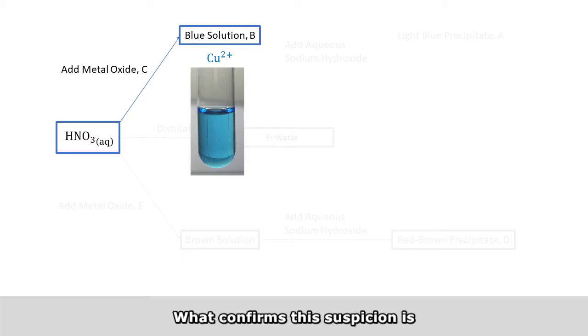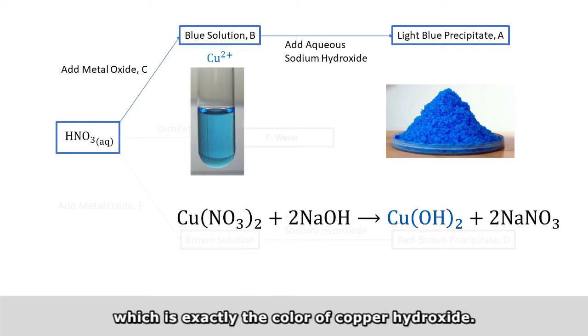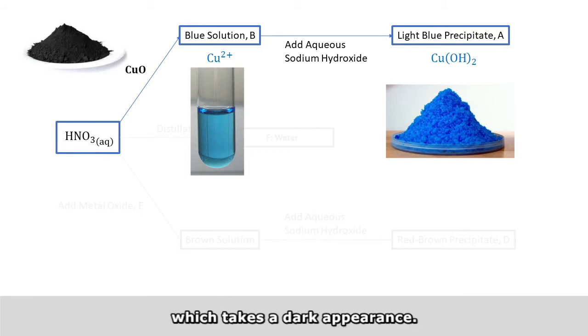What confirms this suspicion is that the addition of sodium hydroxide produces a blue precipitate, which is exactly the color of copper hydroxide. Therefore, the metal oxide at the beginning is simply copper oxide, which takes a dark appearance.